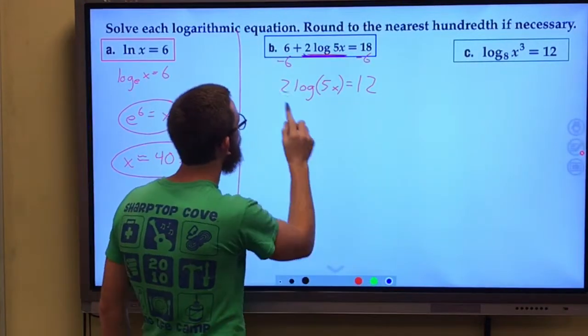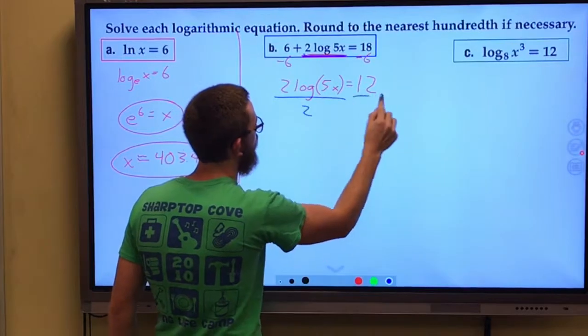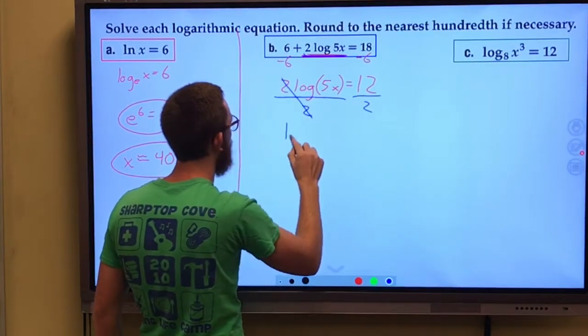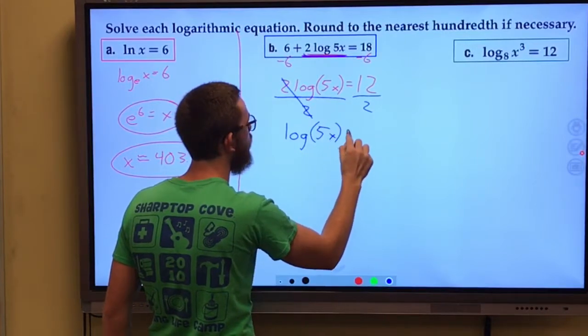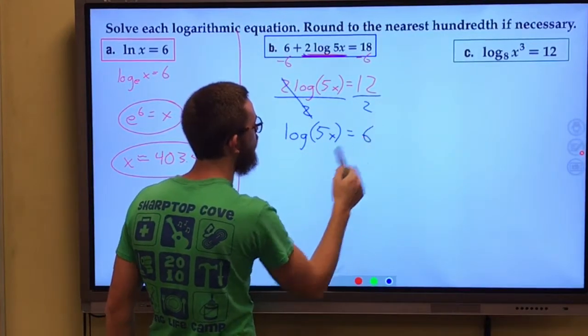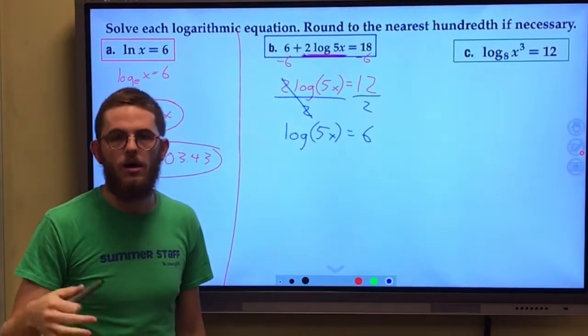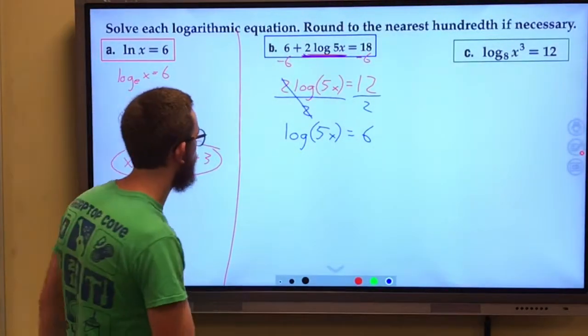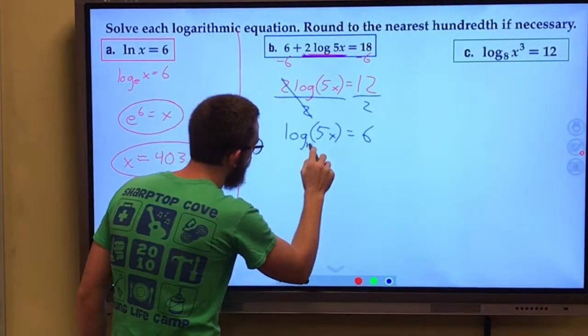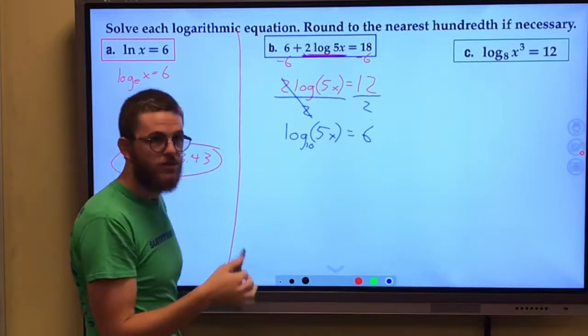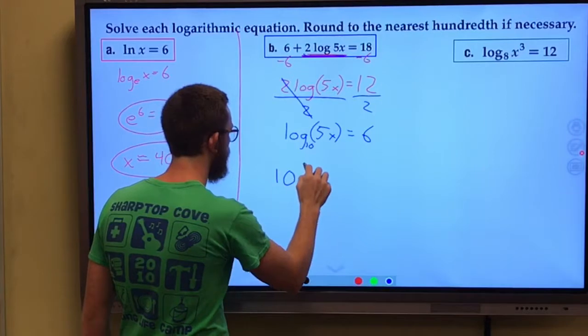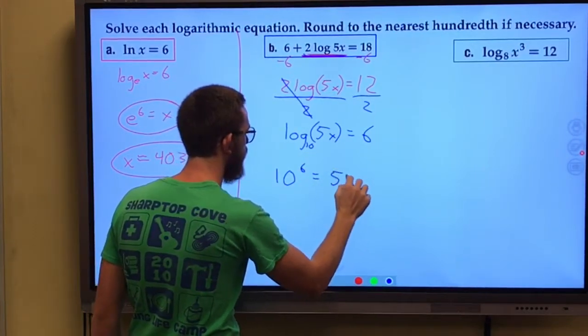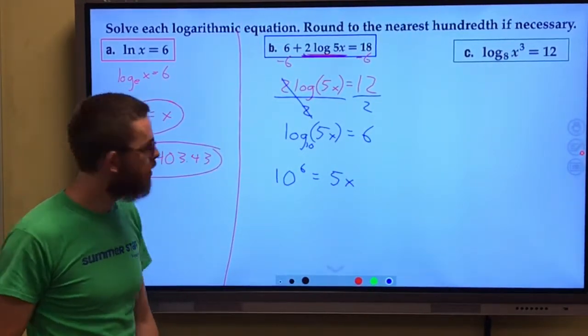I'm now going to divide both sides by two. I have log 5x = 6. And now remember a log is an exponent. This is log base ten. If it's not written, it's understood to be log base ten. So 10^6 = 5x.